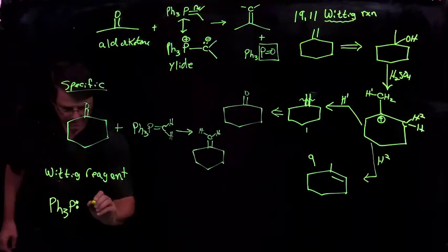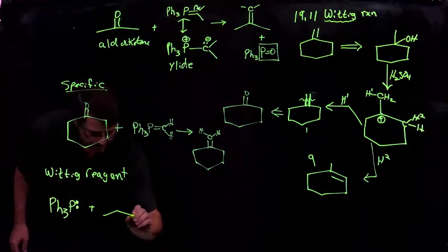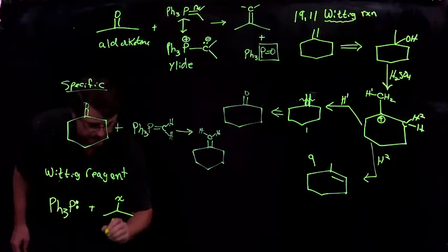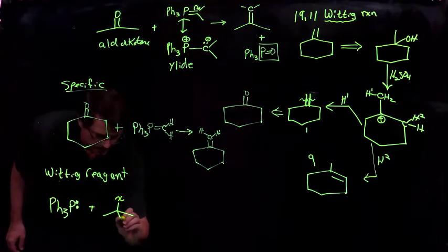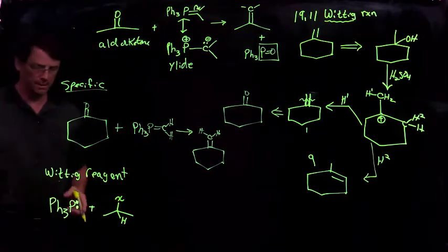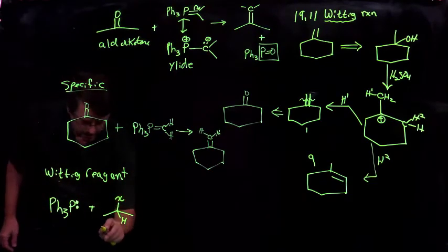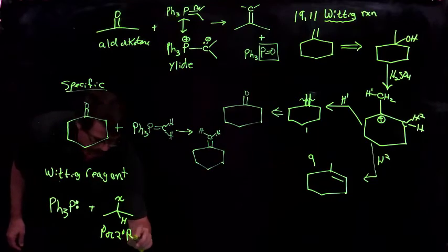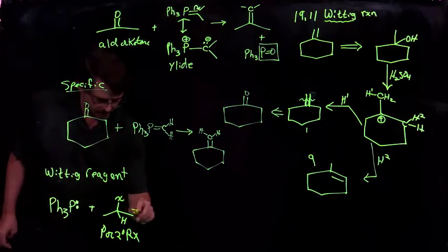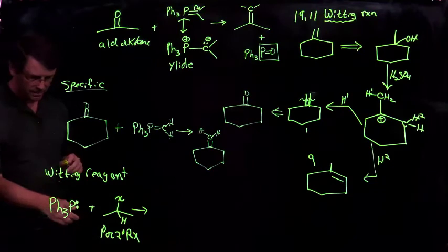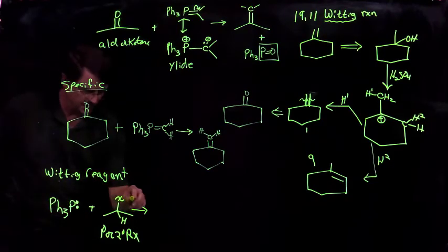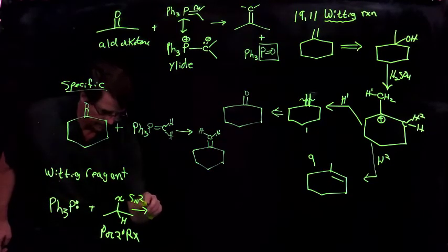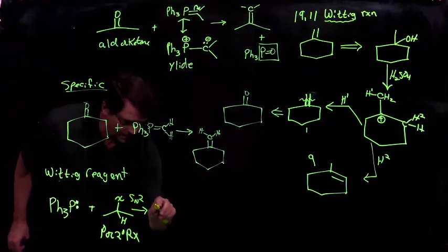And we can react it with any number of alkyl halides. We do need a hydrogen here. So these can be primary or secondary alkyl halides. The first thing that we do is there's an alkylation reaction, a simple SN2 displacement to form the phosphonium.